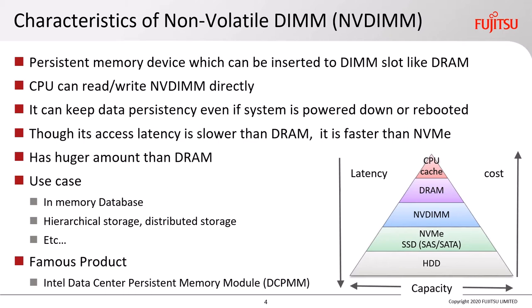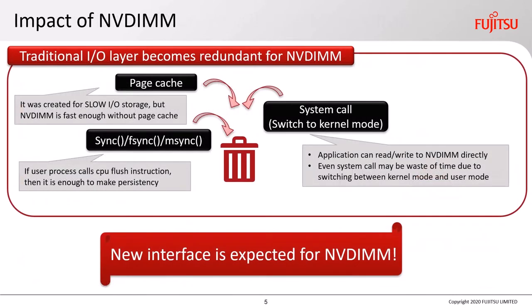As you know, its most famous product is the Intel Datacenter Persistent Memory Module. The impact of NVDIMM is that the traditional IO layer becomes redundant. First, page cache becomes redundant — it was created for slow IO storage, but NVDIMM is fast enough without it. Any sync system call is also redundant; if a user process calls a CPU cache flush instruction, that is enough to ensure persistency. In addition, system calls themselves may be redundant because an application can read or write to NVDIMM directly like RAM — even a system call may be a waste of time due to switching between kernel mode and user mode. So a new interface is expected for NVDIMM.